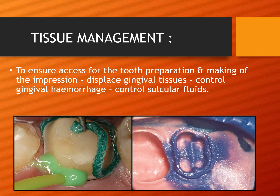Tissue management is a very important step to obtain an accurate impression. It includes fluid control as well as retraction of the gingival tissues. Gingival retraction is necessary to expose the subgingival cervical level of the tooth preparation, to displace the gingival tissue, control gingival hemorrhage, and control sulcular fluids. This step has great influence on the final impression.